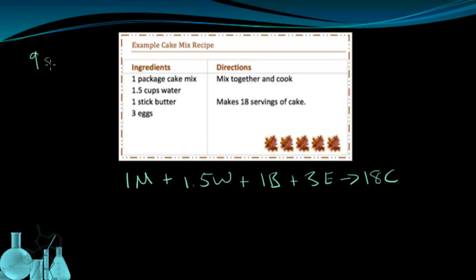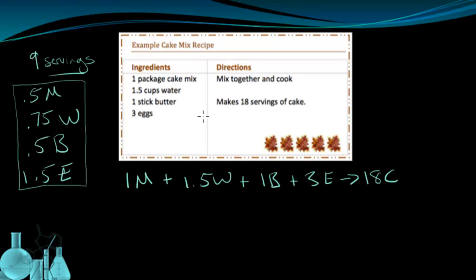So if I want nine servings, that's half of what this recipe makes. So I can use half of all the amounts. I can use half of the package of cake mix, 0.75 cups of water, half a stick of butter, and 1.5 eggs. I just scaled down this entire recipe because I wanted less servings. I wanted half as many servings, so I scaled down the ingredients by one half.